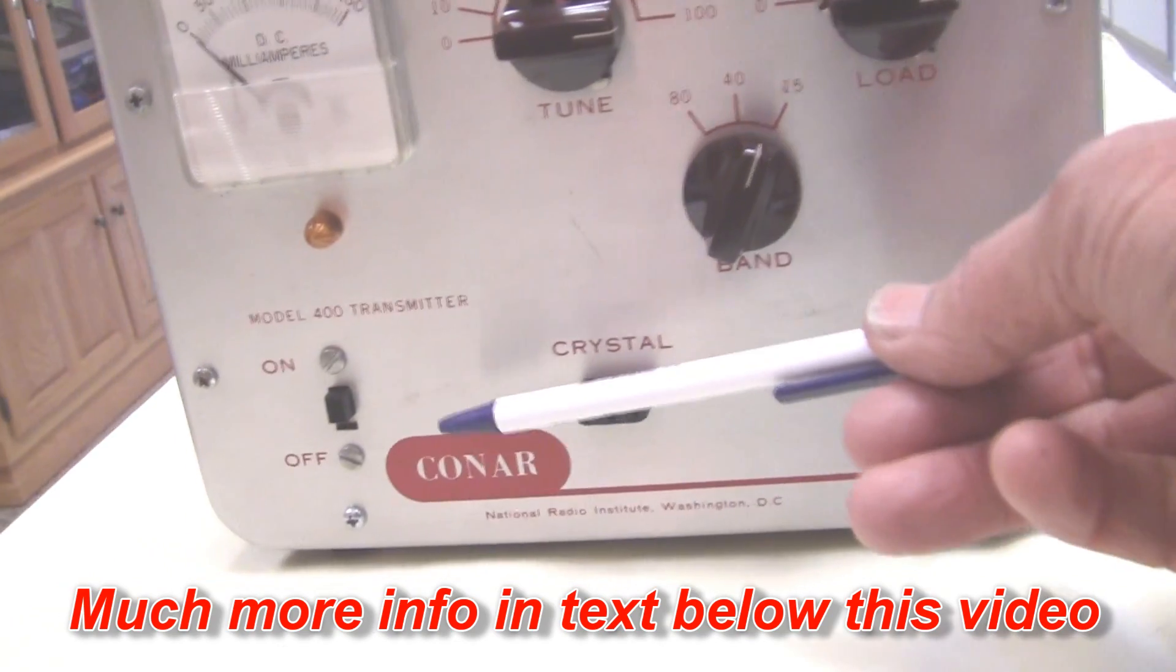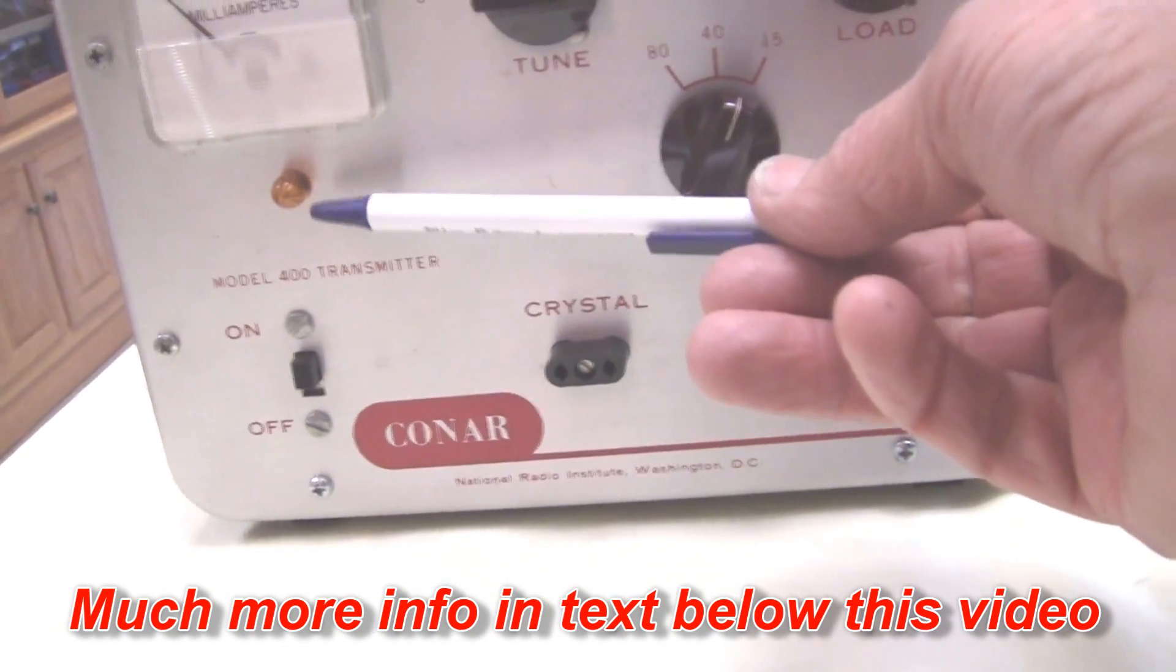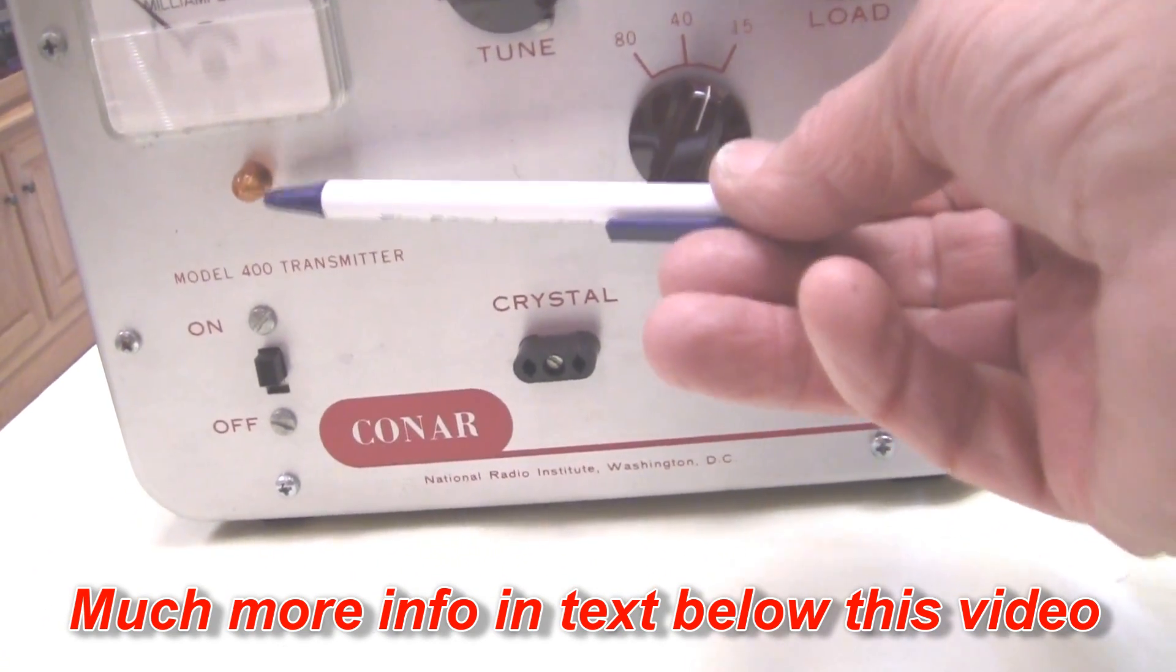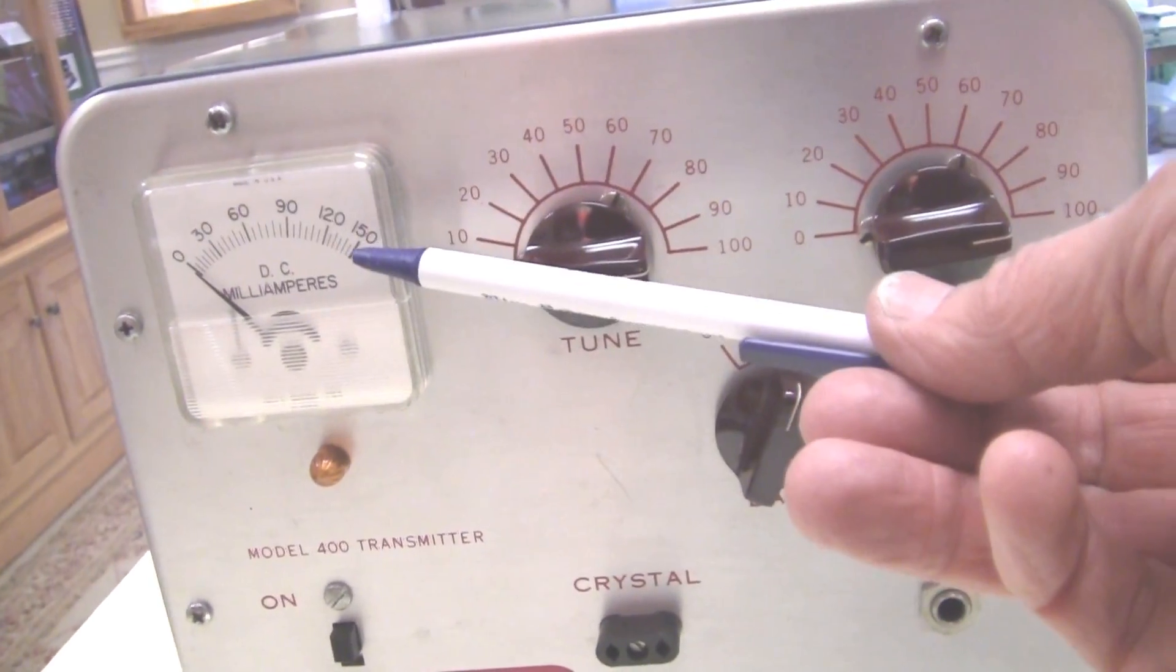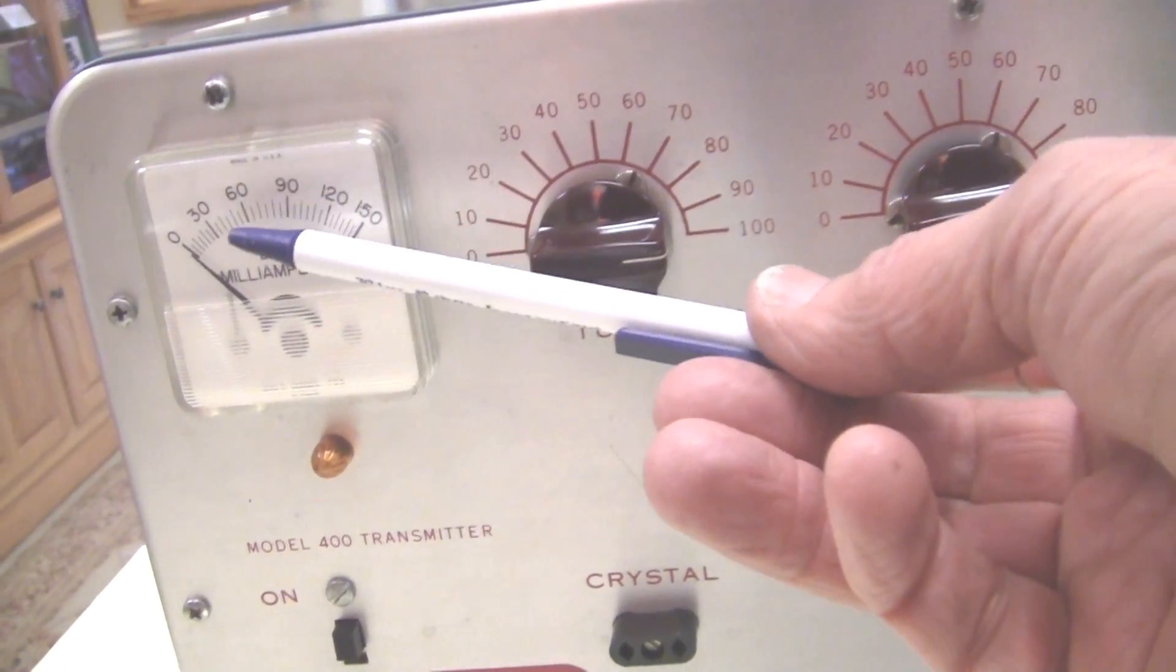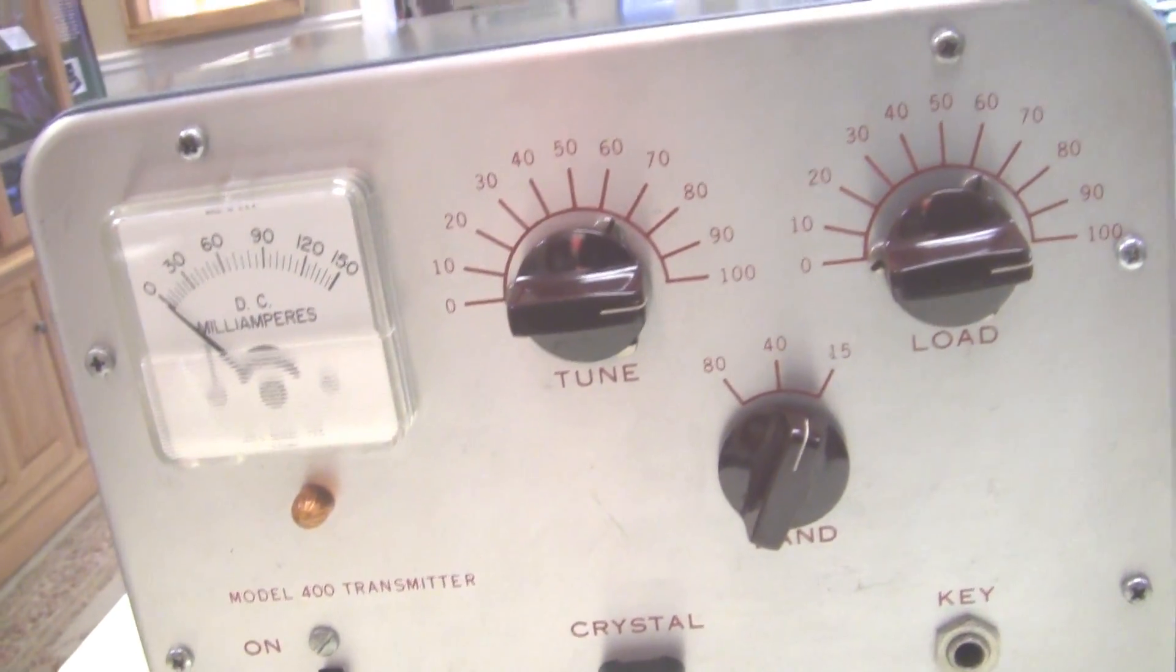And here's where we would plug in the key for keying the device. And here's where we plug in the crystal. And here's the on-off switch. And here's the indicator lamp indicating it's on. And this is the meter for reading the cathode current. And that's how we tune it for minimum current gives us resonance.